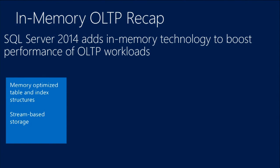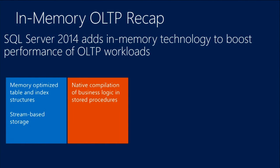Because we use memory as the main storage for the rows, the persistence mechanism we have — because we do have persistence — does not need to use pages and does not need to write to random places on disk. Instead, we use stream-based storage. We optimize for sequential I/O, and I will go into a bit of detail about what that means exactly.